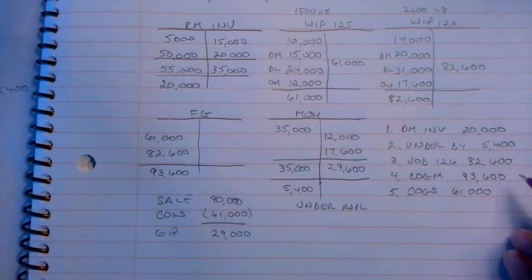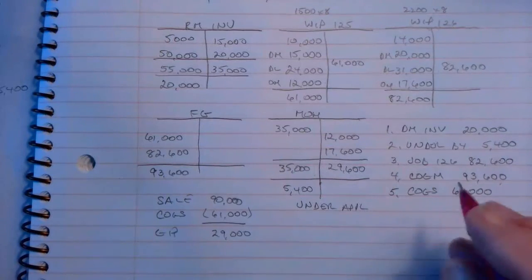Okay, and finally, what's the gross profit on 125? The gross profit is $29,000.